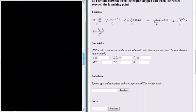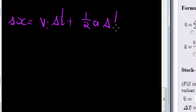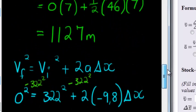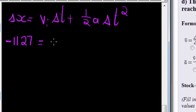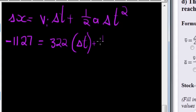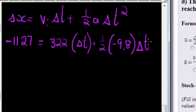The formula we are going to use has delta X, v_i, delta T, and acceleration. That formula says delta X equals initial velocity times time plus one-half times acceleration times time squared. When we substitute, we see that negative 1127 is our change in displacement, equal to initial velocity of 322 meters per second times time, plus one-half times acceleration of negative 9.8. Our unknown t has a square — that means we're working with a quadratic equation.